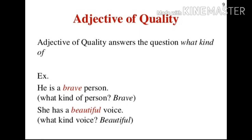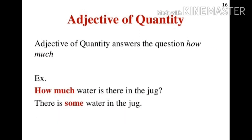Adjective of quality answers the question 'What kind of?' For example, 'He is a brave person.' If we ask the question 'What kind of person?', the answer will be brave. Example number 2: 'She has a beautiful voice.' If we ask 'What kind of voice?', the answer will be beautiful. So it gives the answer of the question by adding 'What kind of?'